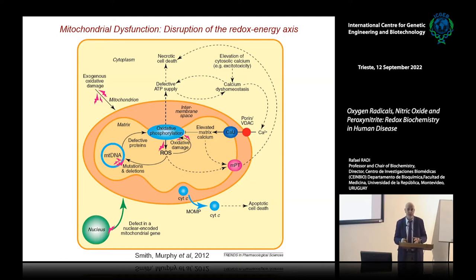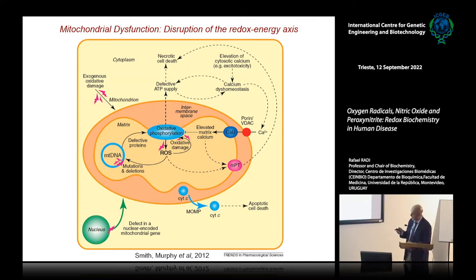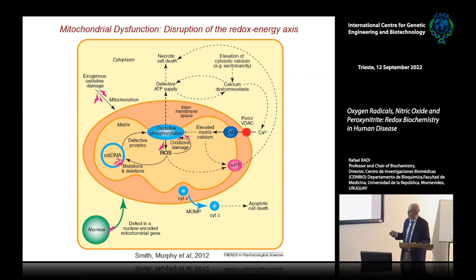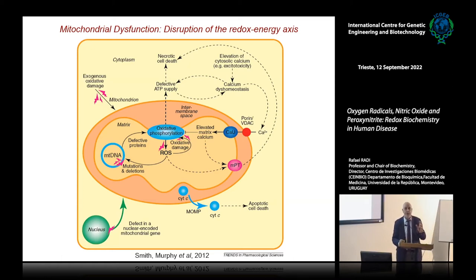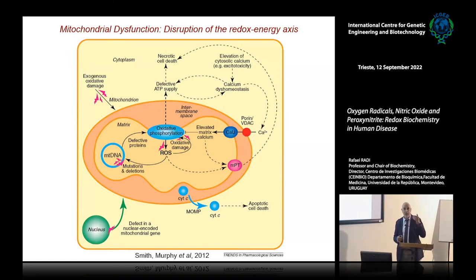In many disease processes and in the aging process, mitochondrial function is compromised — what we call mitochondrial dysfunction. Some of this dysfunction is due to excess formation of reactive oxygen species by mitochondria, leading to oxidative damage and impaired bioenergetic control, the release of pro-apoptotic factors such as cytochrome C to promote apoptotic cell death, or possibilities leading to necrotic cell death. We have done extensive work on the interrelationship of mitochondrial signaling of cell death by the release of cytochrome C.